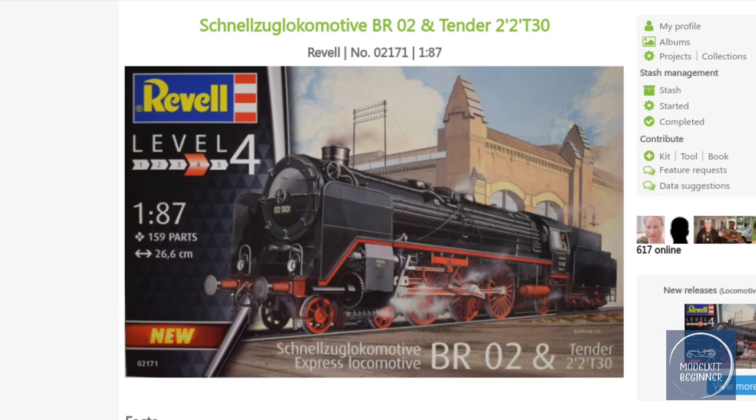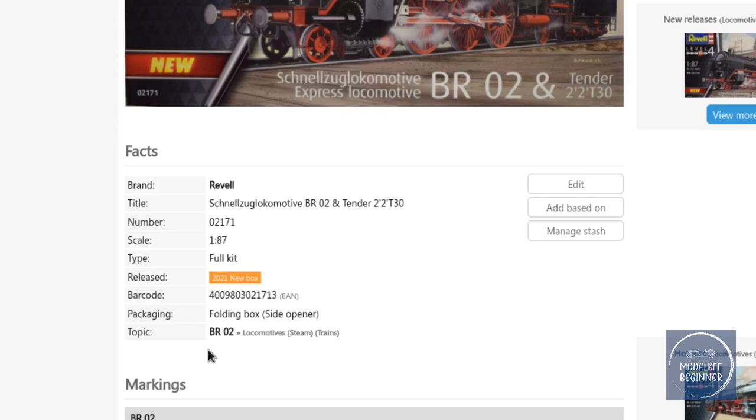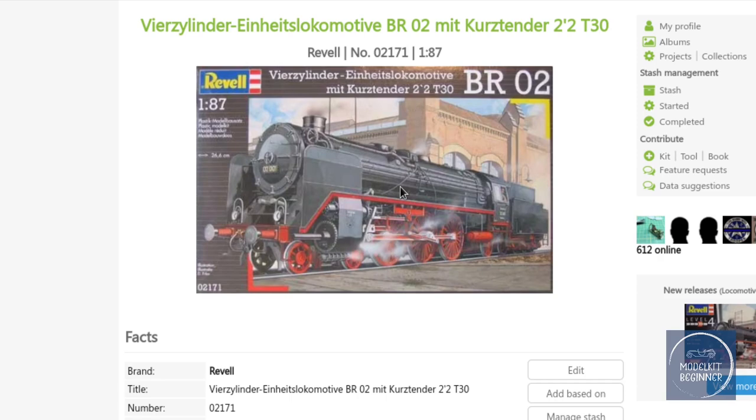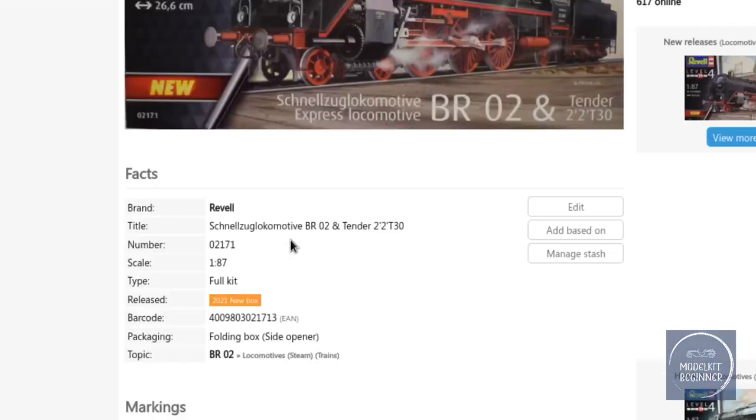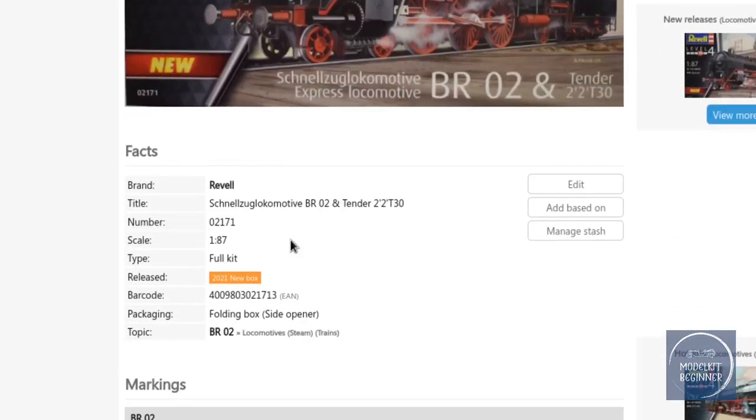This kit has 159 parts, which is quite a bit considering this is only 1:87, also known as HO scale. This particular kit came out in 2021. Looking at the previous version, it is basically exactly the same, and if the fine folks at Scalemates are to be trusted, this has only a new box and nothing else.